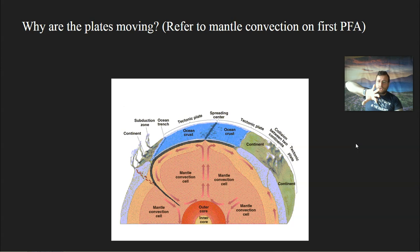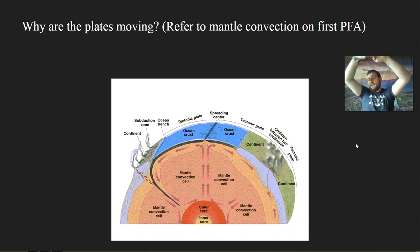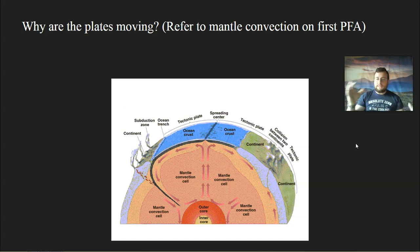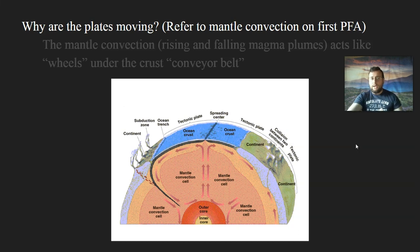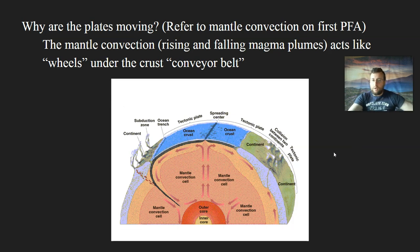Magma will actually start rising as it becomes less dense and hotter. Then it gets to the top of the crust, cools down, gets denser again, sinks back to the bottom, heats up again — and that becomes a cycle called a mantle convection cell. This acts like wheels, dragging the pieces of the crust with it and causing the plates to move.